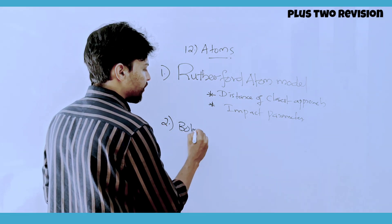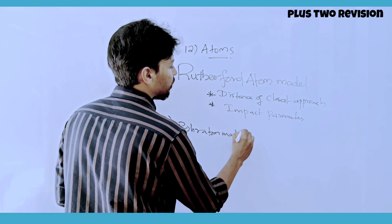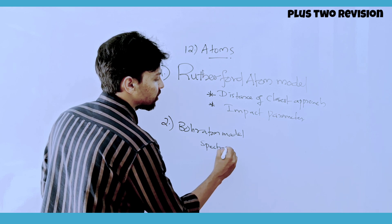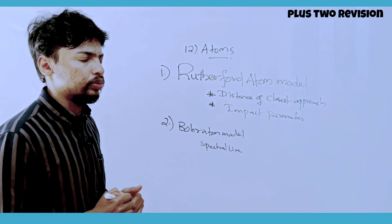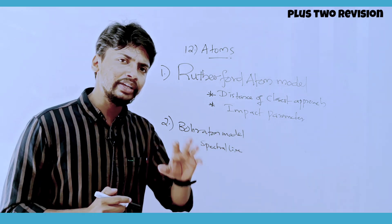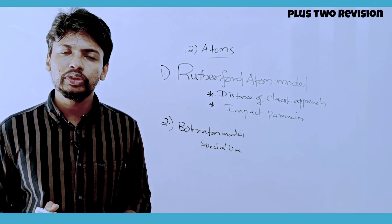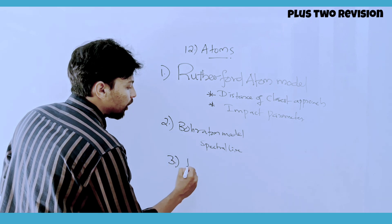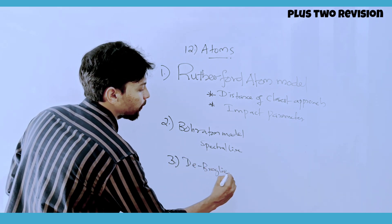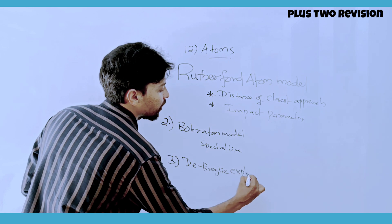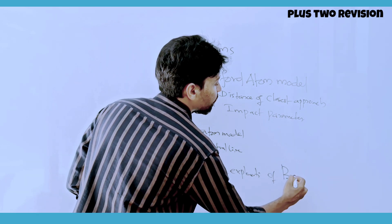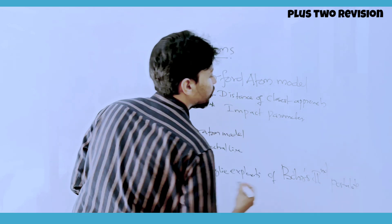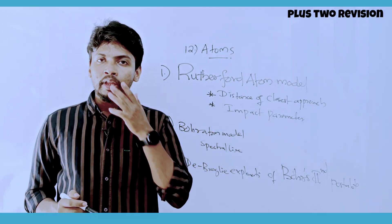Next is the Bohr Atom Model and its limitations. Topics include spectral lines and Bohr's Second Postulate, which is particularly important and will be studied in detail.